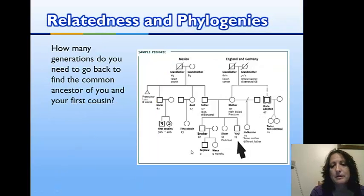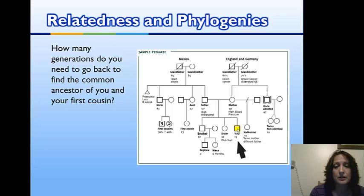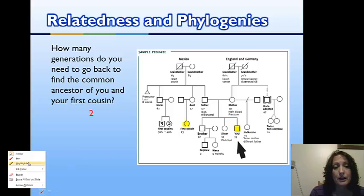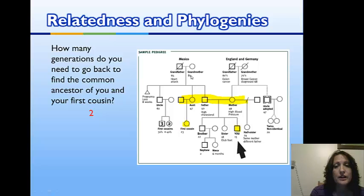To apply this to something more familiar — here's you on a pedigree, and here's your first cousin. How many generations do you have to go back to find the common ancestor? The answer is two: we're in one generation, go back to our parents and their aunt or uncle, and then back to our grandparents. You and your cousin share a set of grandparents, so you have to go back two generations to find a common ancestor.